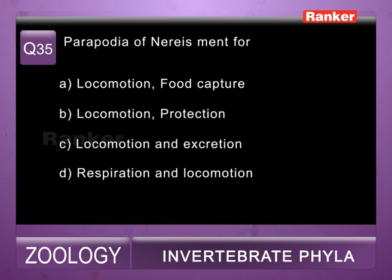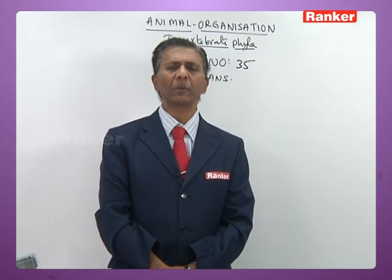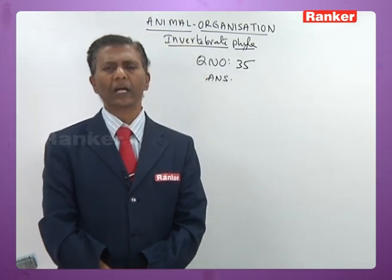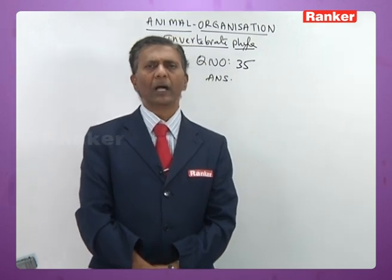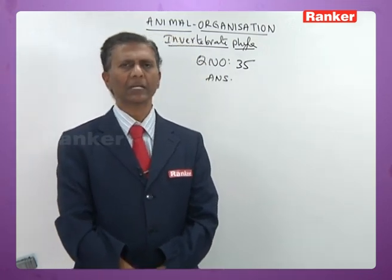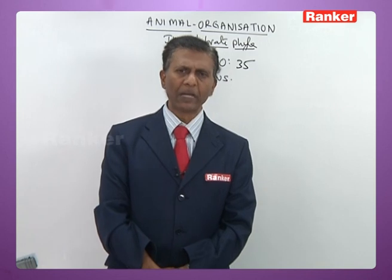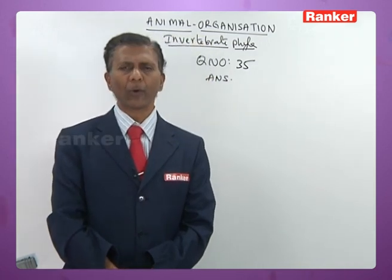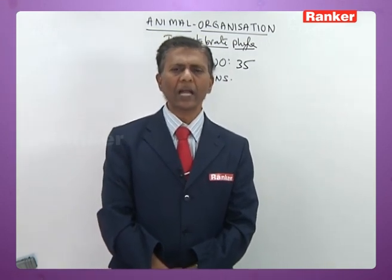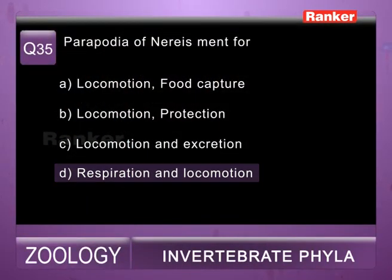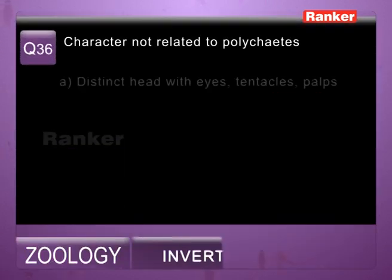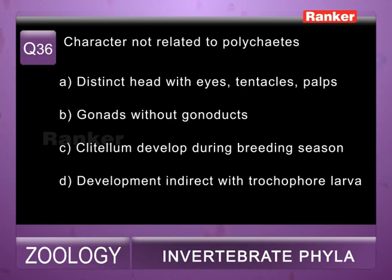Question thirty-five: parapodia of Nereis are meant for — a) locomotion and food capture, b) locomotion and protection, c) locomotion and excretion, d) respiration and locomotion. Nereis belongs to class Polychaeta. In all polychaetes, the locomotor organs are parapodia; within them setae are present, and parapodia are also provided with numerous blood capillaries. So parapodia serve both locomotion and respiration. Thirty-fifth question correct answer is d.